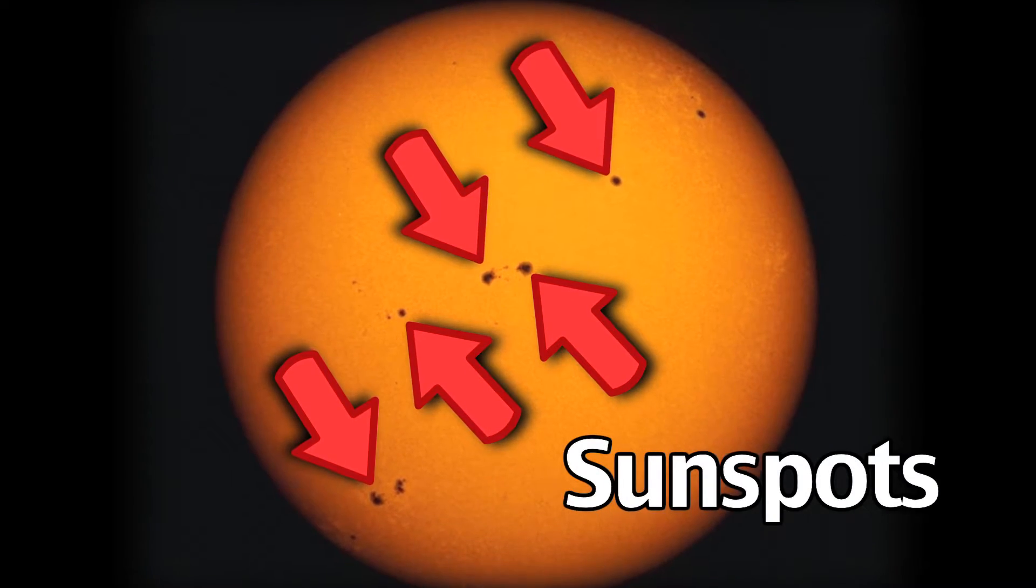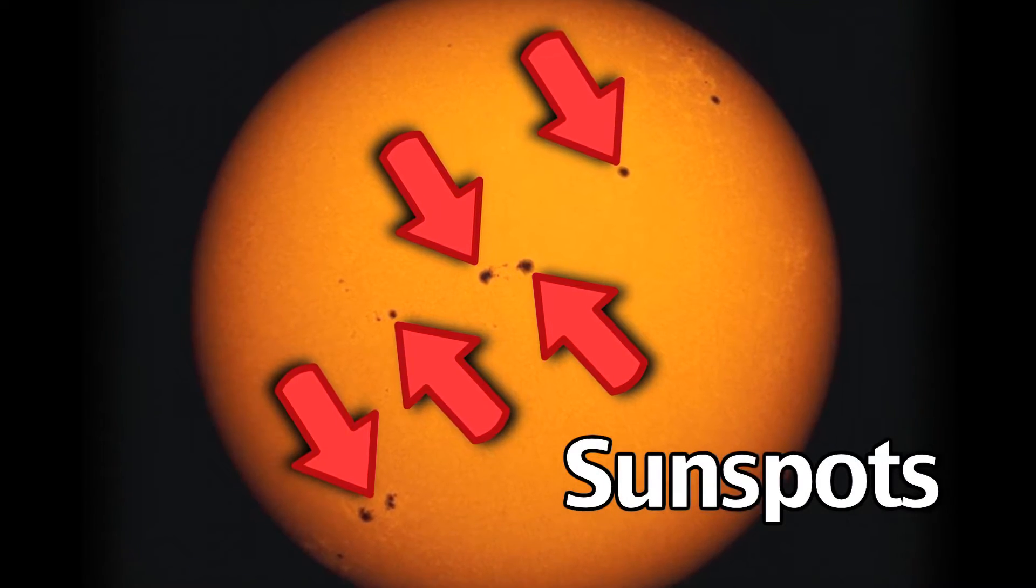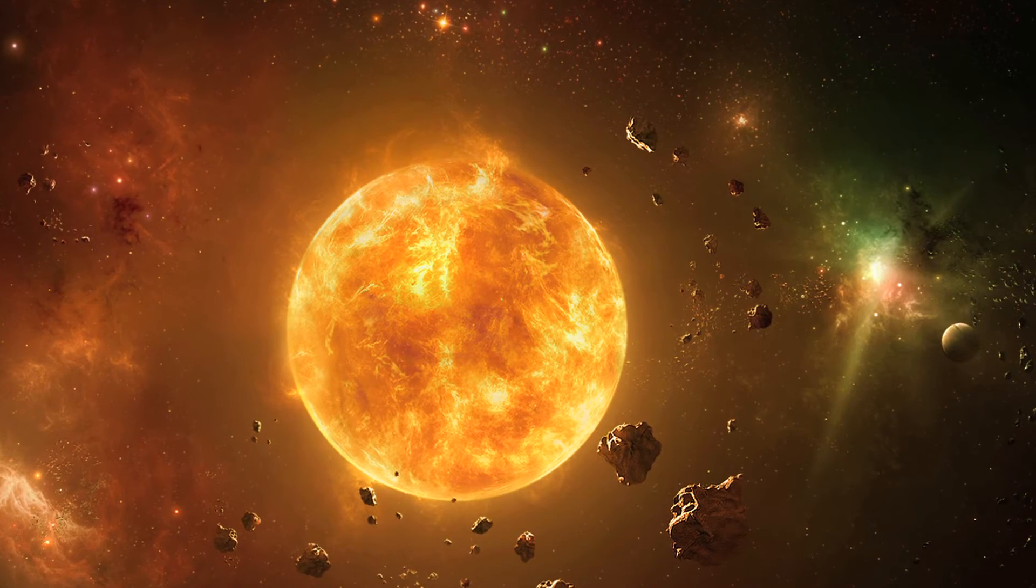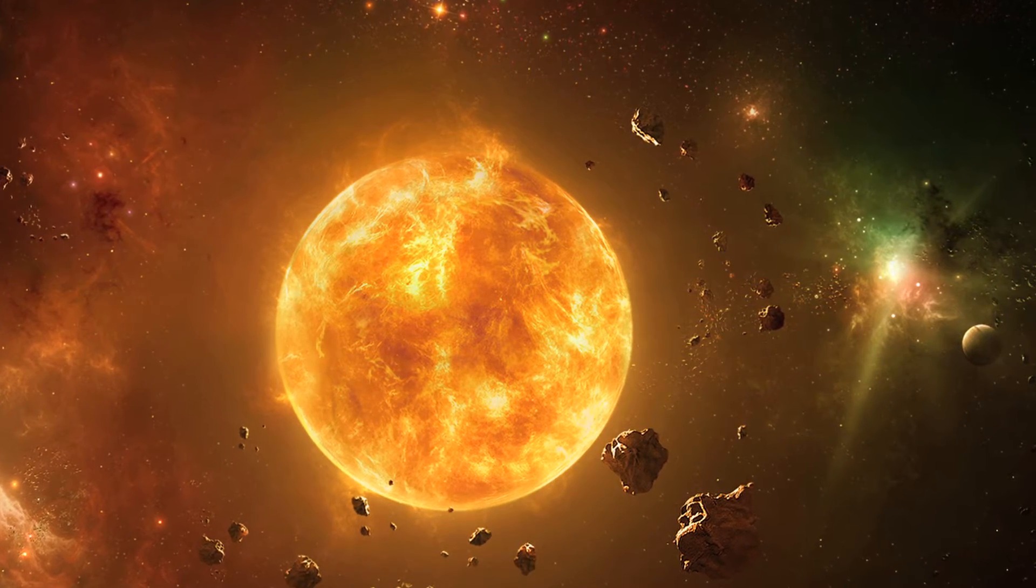Sunspots are electromagnetic storms that swirl through the hot gases near the sun's surface. They're slightly cooler than the rest of the star's mass, so they appear darker in color when observed from the Earth.